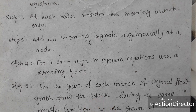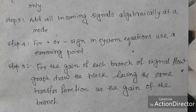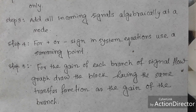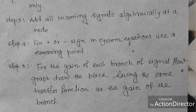Step 4: for positive or negative signs in the system equations, use a summing point — this is a very important step. The last step is for the gain of each branch of the signal flow graph, draw a block having the same transfer function as the gain of that branch. Now let's consider one example and solve it using these steps.